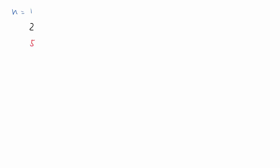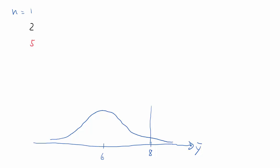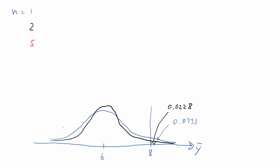Let's reflect on what we've achieved in this question. We calculated probabilities for the sample mean for three different sample sizes: 1, 2, and 5. When the sample size was 1, the distribution of ȳ was exactly the same as Y, and the probability that ȳ was larger than 8 was about 8%. When the sample size was 2, the distribution looked slightly different and the probability — the area to the right of 8 — was 0.0228. With an even larger sample, that probability was basically 0, so it shrunk significantly with sample size.